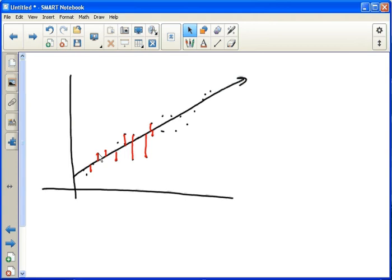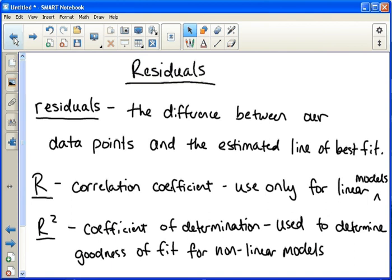So that's the idea behind residuals. Residuals are the difference between our actual data and our estimated line of best fit. Now that's related to two things we use, and you'll see in the calculator in a minute. And that's r, which is the correlation coefficient. Now this only applies to linear models, absolutely only applies to linear models. And our calculator will pretty much only show r for linear models as well.